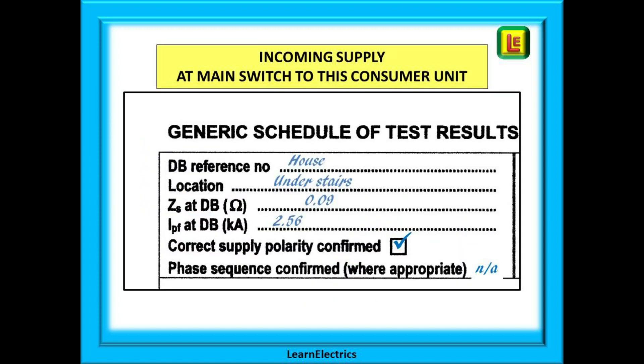Now we can return to the schedule and enter the Z value as 0.09 ohms in this example. Our meter may give us the Prospective Fault Current at the main switch. It is called IPF on the schedule and this stands for Current Prospective Fault, which is another way of saying Prospective Fault Current. Next, did you check the incoming supply polarity that Phase, Neutral and Earth are all the correct way round? Tick this box if it was correct. We are dealing here with single phase, so three phase sequencing is not applicable, just enter NA.